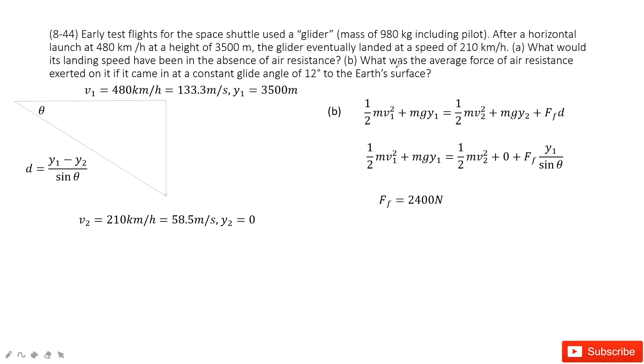The second question asks you, what was the average force of air resistance? If we consider the air resistance, it comes in at a constant angle, 12 degrees. So that means the angle theta is given. This angle theta is given.